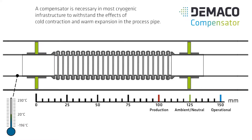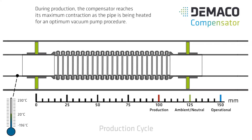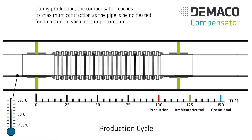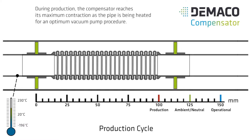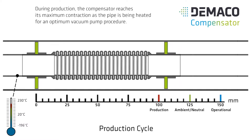A compensator is necessary in most cryogenic infrastructure to withstand the effects of cold contraction and warm expansion in the process pipe. This animation shows the function of a compensator. During production, the compensator reaches its maximum contraction as the pipe is being heated for an optimum vacuum pump procedure.